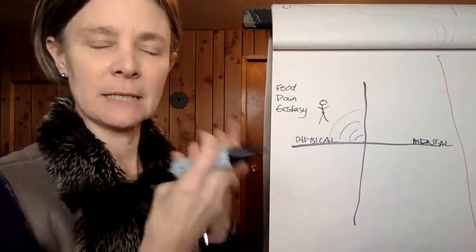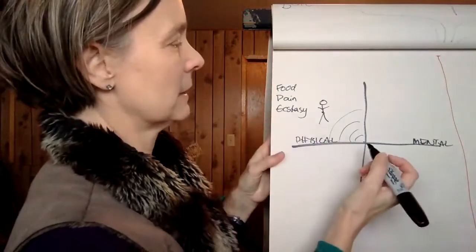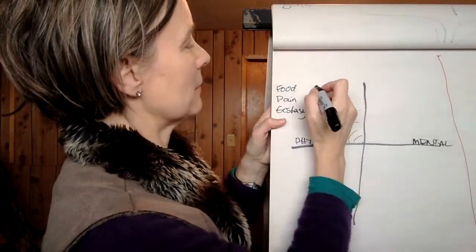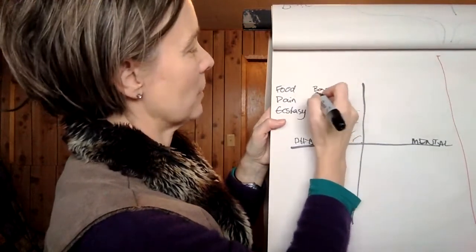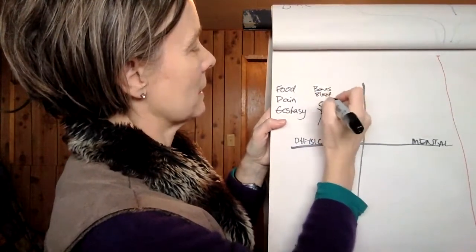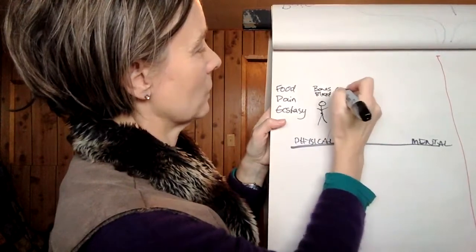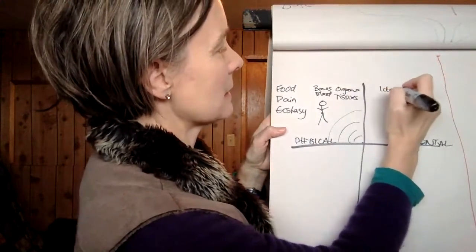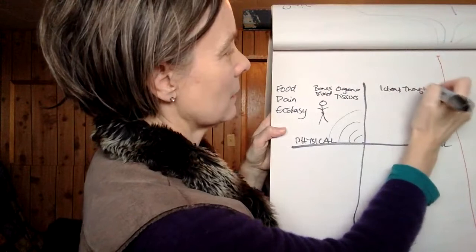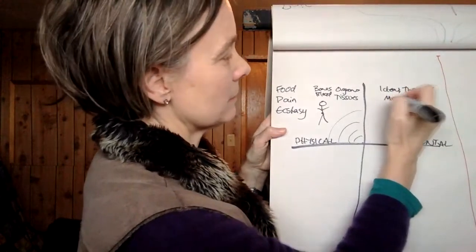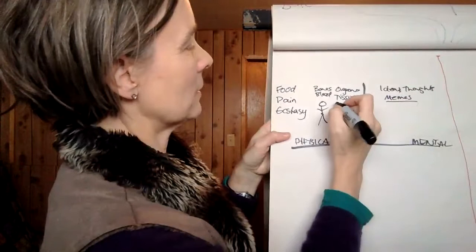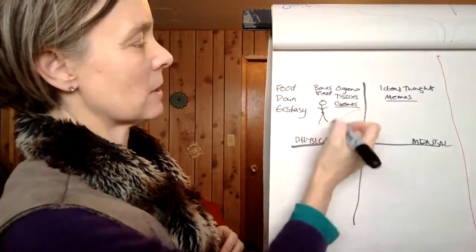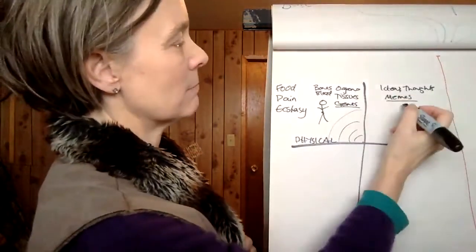So food for the mental body are ideas, knowledge, information. It's made of memes. Here, the physical body is made of physical things: bones, blood, tissues, organs. The mental body is made of ideas, thoughts, memes. It could be said that the physical body is made of genes. It's got genetic material and the genes are to the physical body what memes are to the mental body.